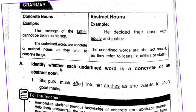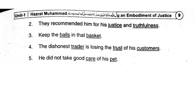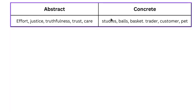Identify whether each underlined word is a concrete or abstract noun. First sentence: 'She puts much effort into her studies as she wants to score good marks.' Effort comes under abstract nouns and studies comes under concrete nouns. Second sentence: 'They recommend him for justice and truthfulness.' Justice and truthfulness both come under abstract nouns.